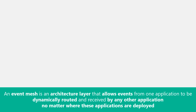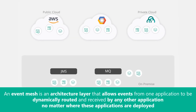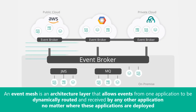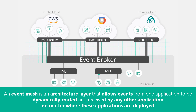Let me introduce you to what an event mesh is. Simply put, an event mesh is an architecture layer that allows events from one application to be dynamically routed and received by any other application, no matter where these applications are deployed — no cloud, private cloud, public cloud, etc. This layer is composed of a network of event brokers. More technically, an event mesh is a configurable and dynamic infrastructure layer for distributing events amongst decoupled applications, cloud services, and devices.